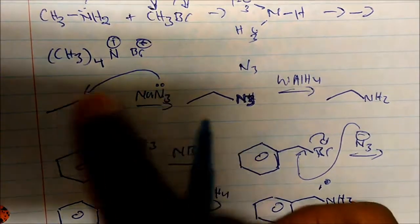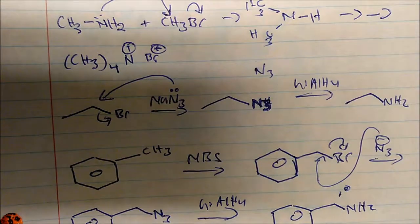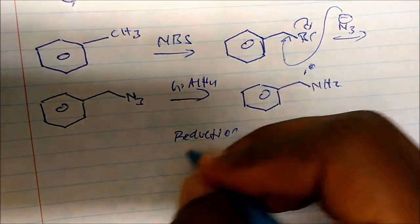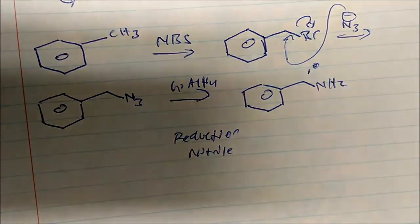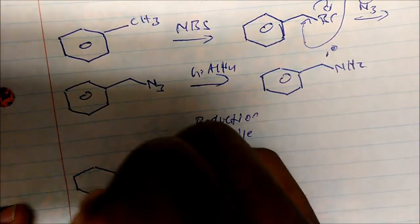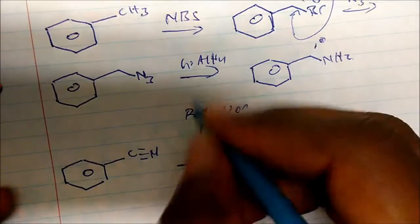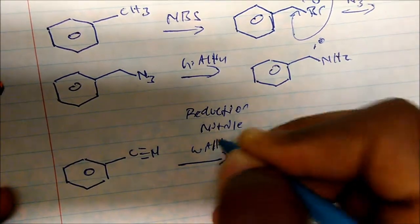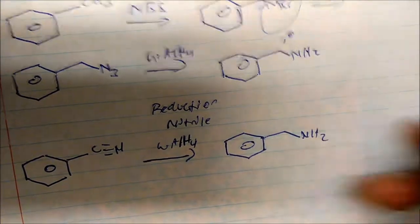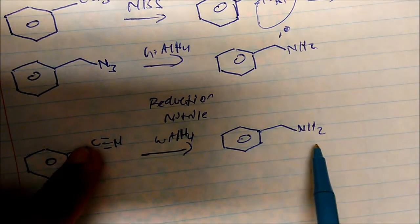So the key takeaway: azide chemistry with a primary alkyl halide gives us the azide molecule, and we reduce with lithium aluminum hydride to get the primary amine. Now let's talk about nitrile reduction. Nitrile chemistry also works well for creating primary amines. If we take acetonitrile and add lithium aluminum hydride, we get the amine — the carbon is there and the amine extends one carbon out.